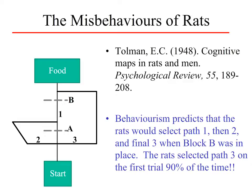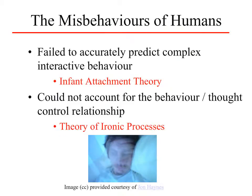However, if a second roadblock is placed at point B, the behaviorist would predict the rats would again take path two, discover it blocked, return, and finally take path three. But what was actually shown was that the rats selected path three on the first trial over 90% of the time. They didn't take path two first, illustrating that the rats had a cognitive map — an internal understanding of the routes and different pathways from start to food box.